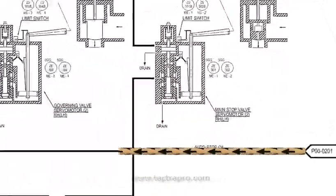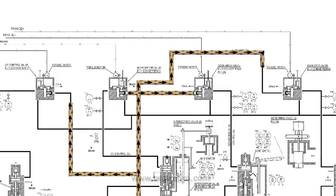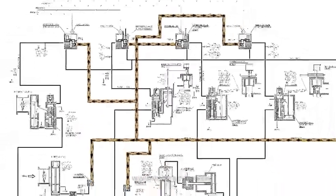The function of the auto-stop oil is to send a trip signal to the servo motor and to close the stop and control valves.